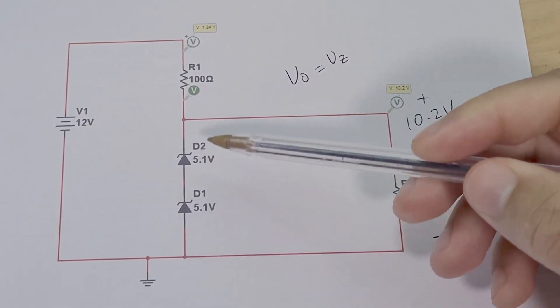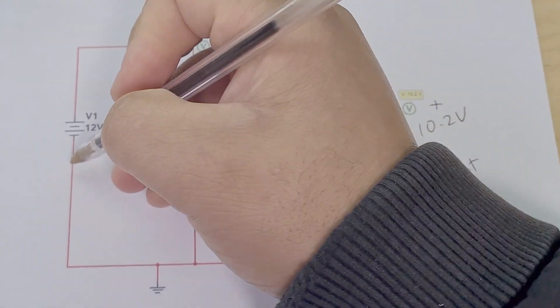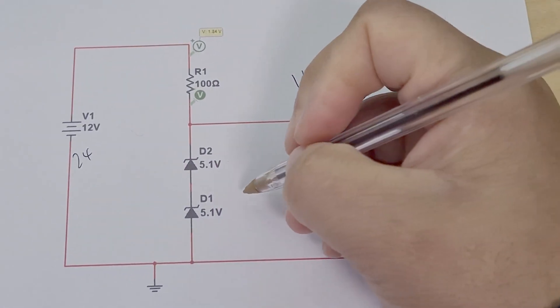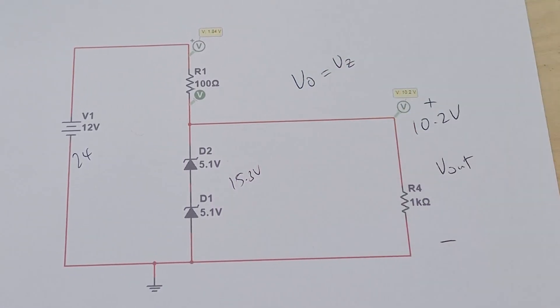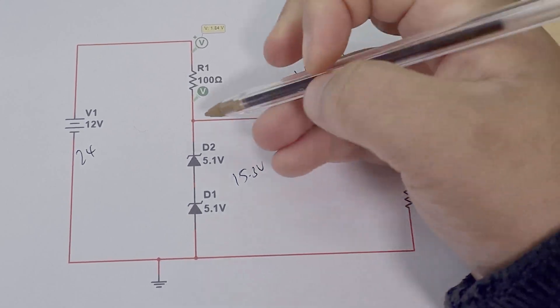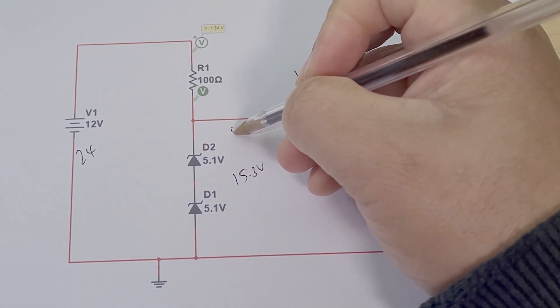And so if I had, let's say I had 24 volts here and I put three of these in series, I would then have 15.3 volts for example. If I had three of them, right? So if I had another one here, another 5.1 volt.